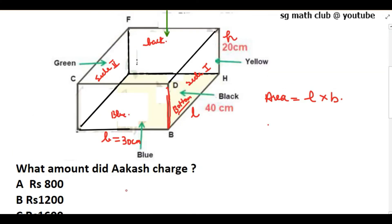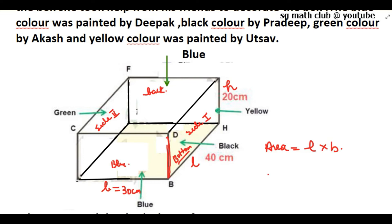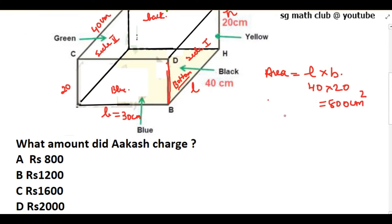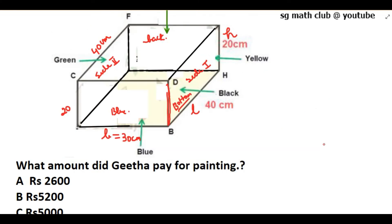The next question is: what amount did Akash charge? Akash painted the green color on side 2. The dimensions are 40 centimeters and height 20 centimeters, so the area is 40 × 20 = 800 centimeter square. Since the rate is rupees 2 per centimeter square, the amount charged by Akash is 800 × 2 = 1,600 rupees.